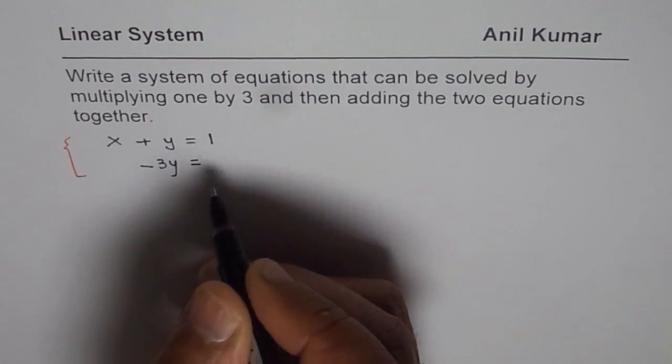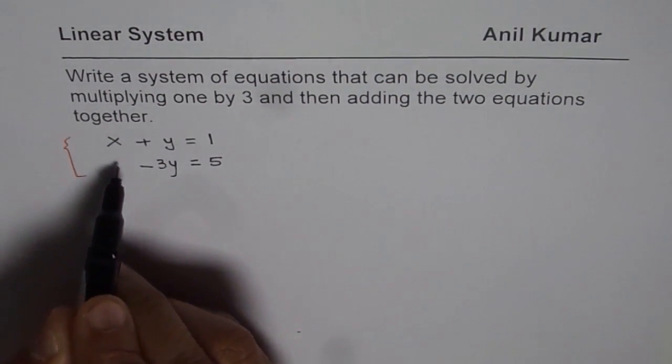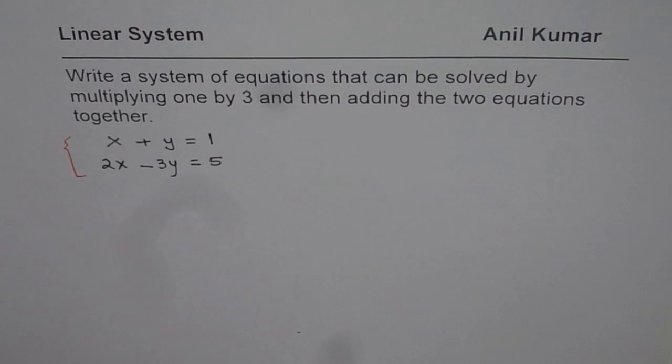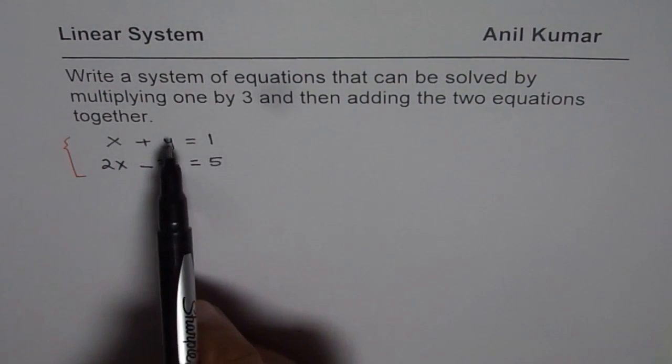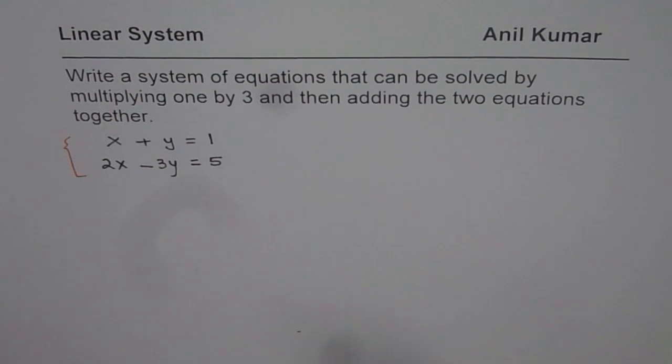3 times this y equals some number, let us say 5. And here we do not want the same x, so we want a different x, we will say 2x. Now that forms a linear system in which we need to multiply one of the equations by 3 and then add to eliminate the variable, find the other variable, and solve the linear system.